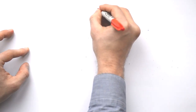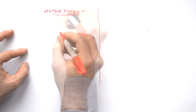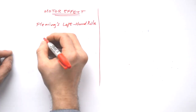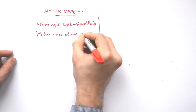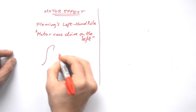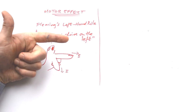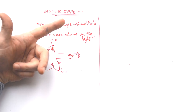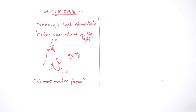Let's make sure we're clear on the rules. The motor effect uses Fleming's left hand rule. If you're British, you can remember this because motor cars drive on the left. The thumb is the thrust, the first finger is the field, and the second finger is the current. We can say that current makes force — when we have a current and we're making force, we use the left hand rule.